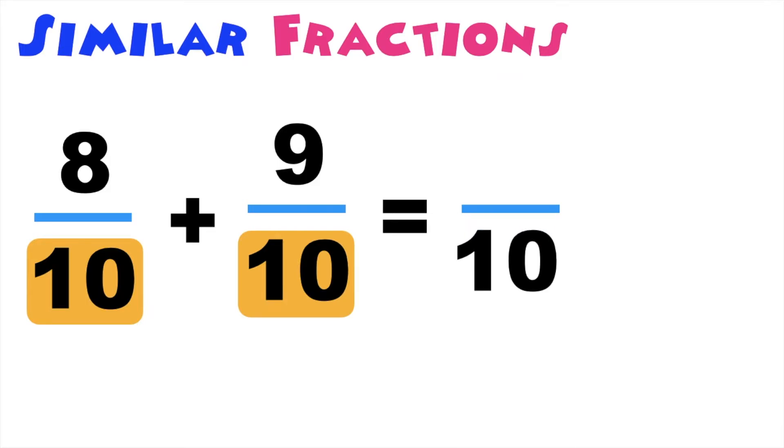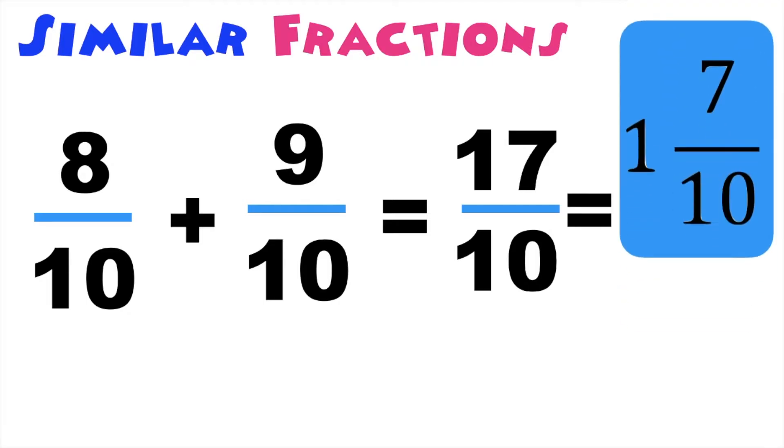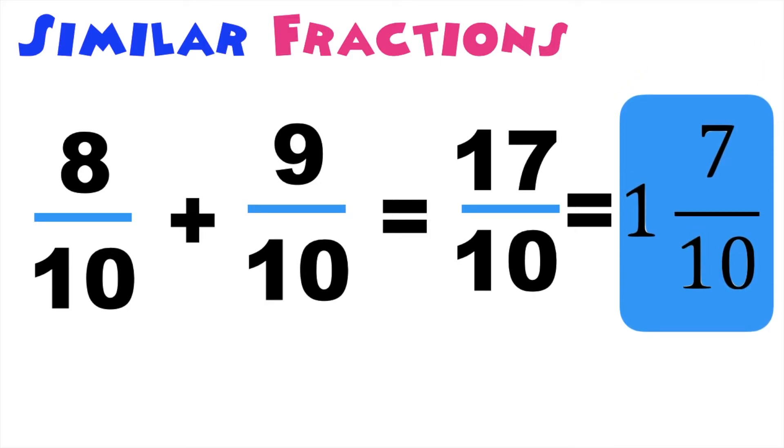Then let's add the numerators. 8 plus 9 is equal to? That's correct, it's 17. So we have 17 tenths. We can write it in lowest terms, so we will have 1 and 7 tenths.